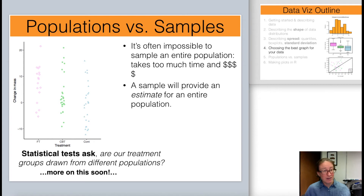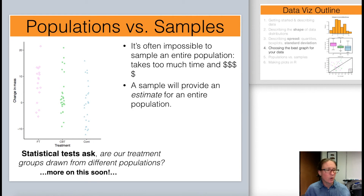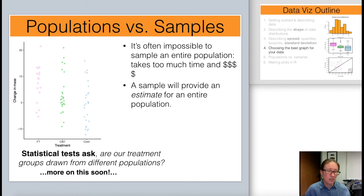Unfortunately, we're limited in time and money, so in a lot of cases it's not possible to sample an entire population. Sometimes it is, but most of the time it's not. Our sample can provide an estimate for an entire population. We're going to dive into talking about statistical tests fairly soon, and the main question that statistical tests are interested in asking is whether our treatment groups are drawn from different populations.